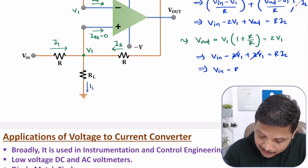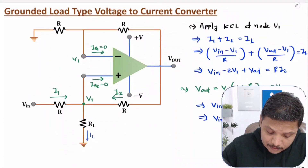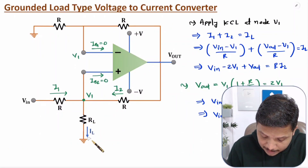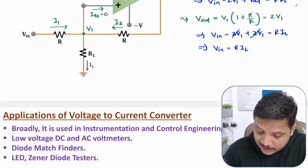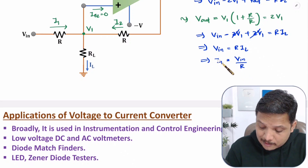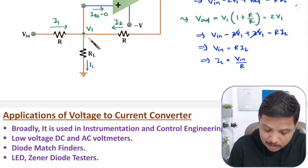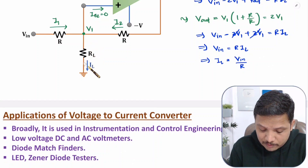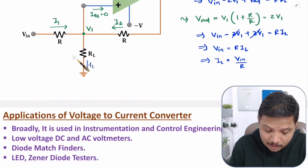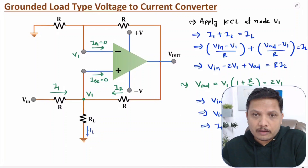Therefore IL = Vin / R. The load current IL is not dependent on RL — it depends only on Vin and the fixed resistor R. So at the load, you can connect any resistor and you will get current IL that depends only on Vin. That is how the grounded load type V2I converter works.